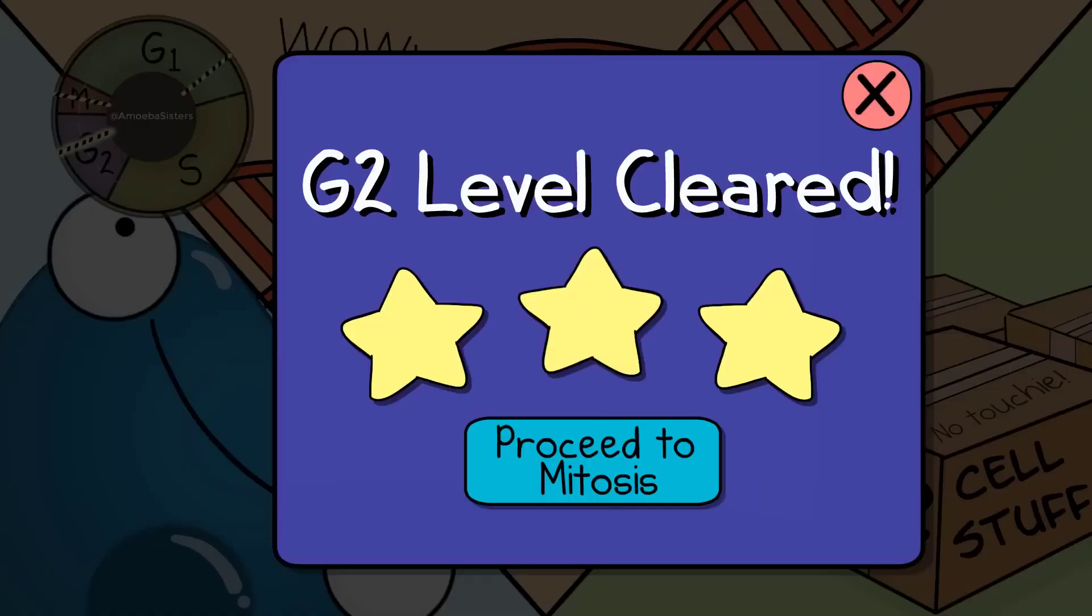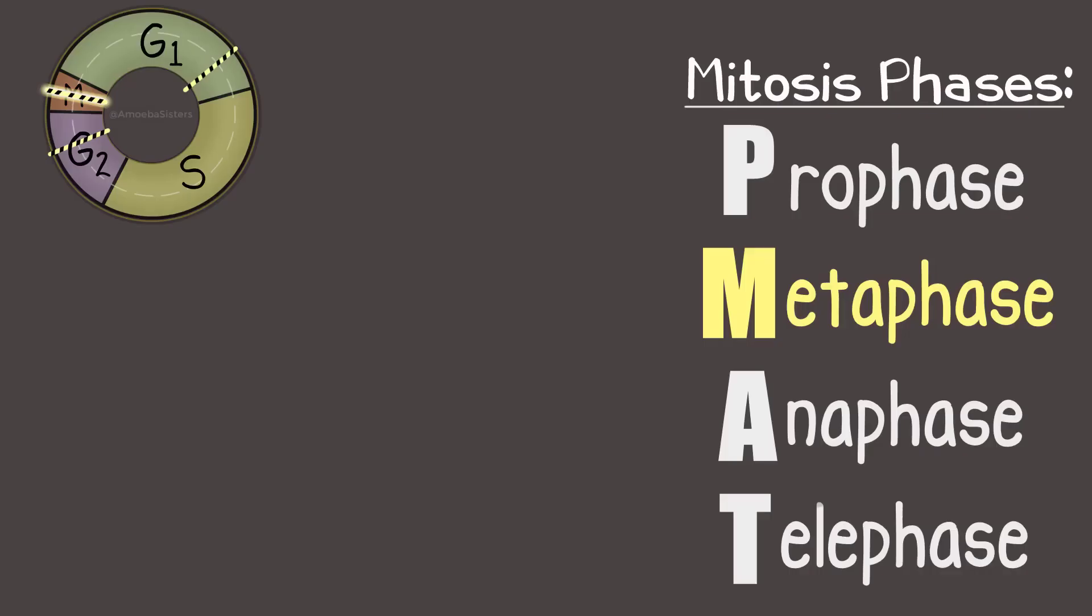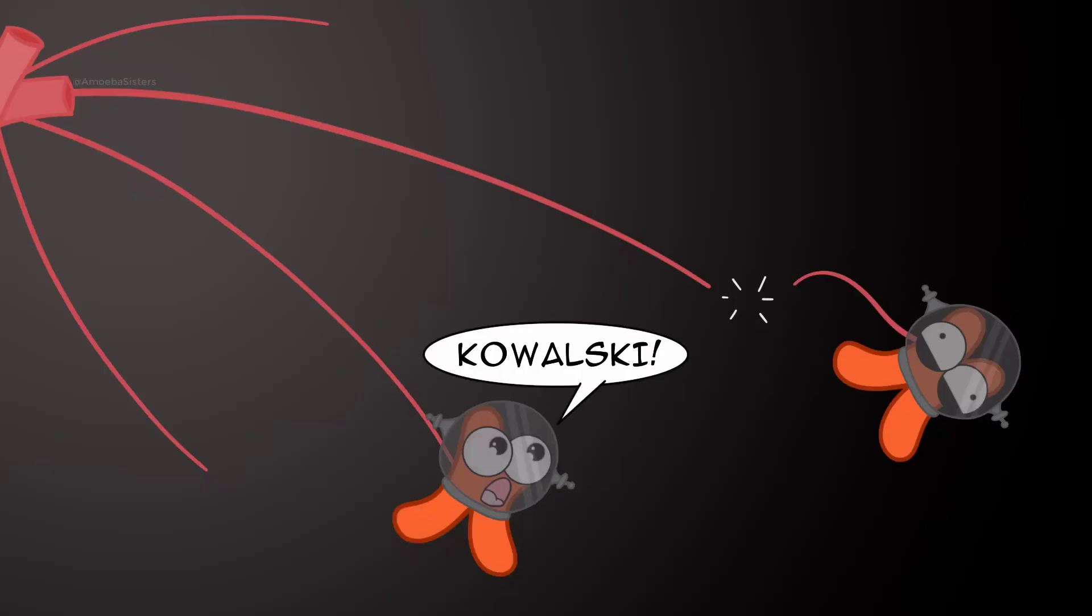Okay then, moving on. This next checkpoint in M phase is my favorite checkpoint. It checks in the stage metaphase to make sure the chromosomes, which are made of DNA, are lined up in the middle correctly. That they're all attached to the spindle correctly because if they're not, the chromosomes will not be separated correctly.